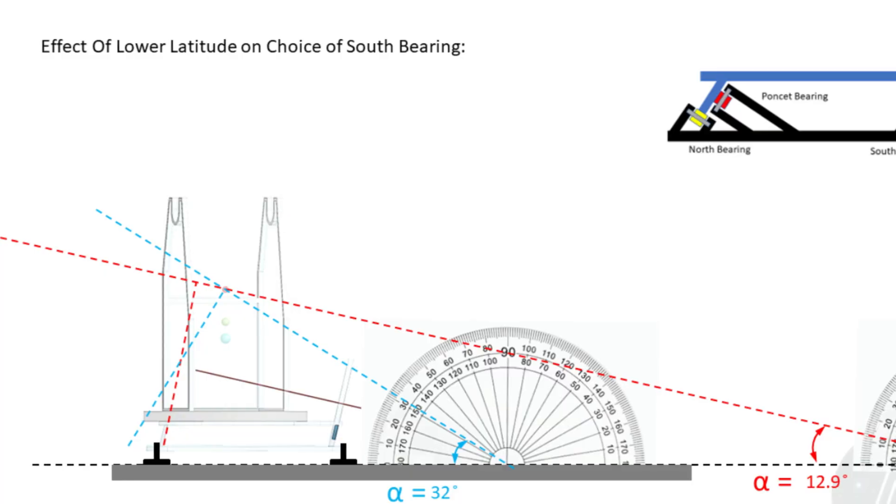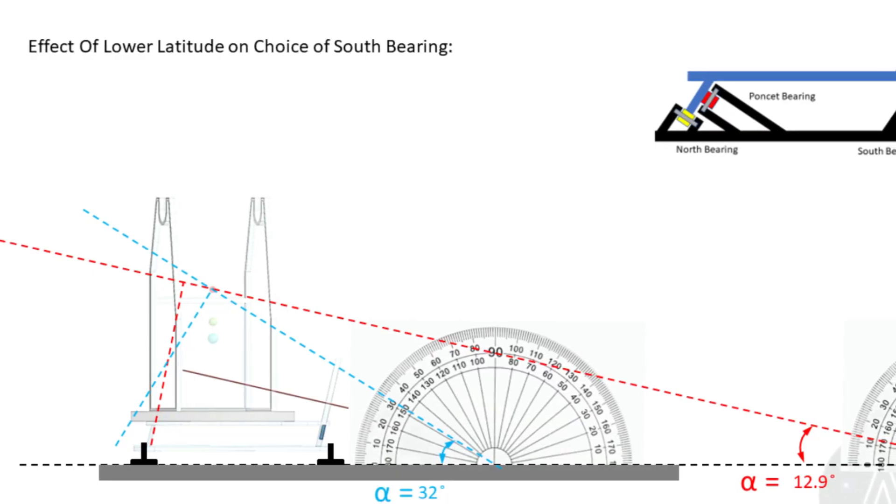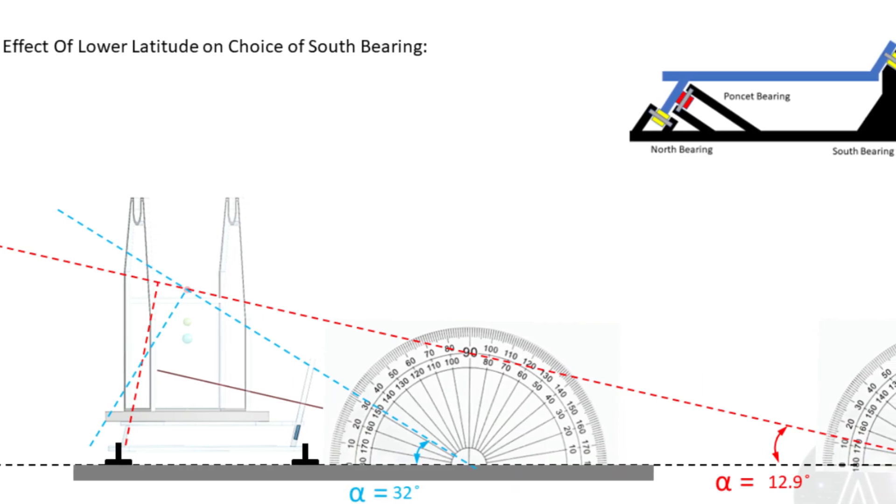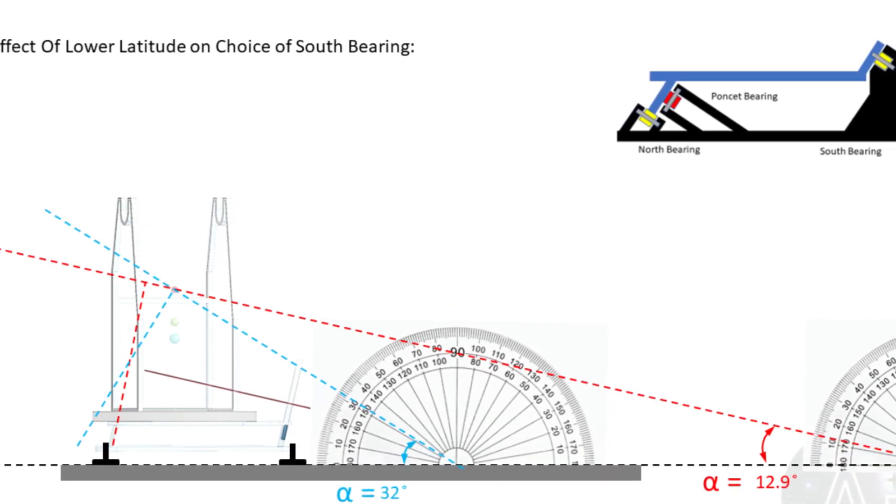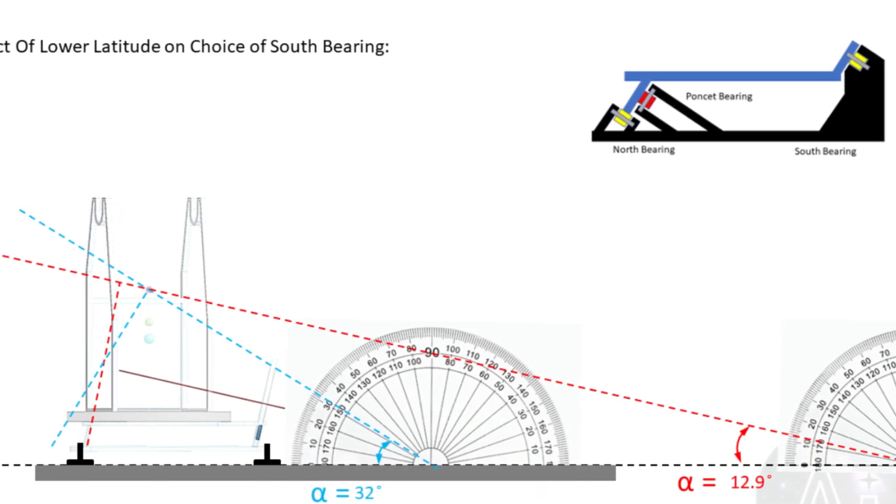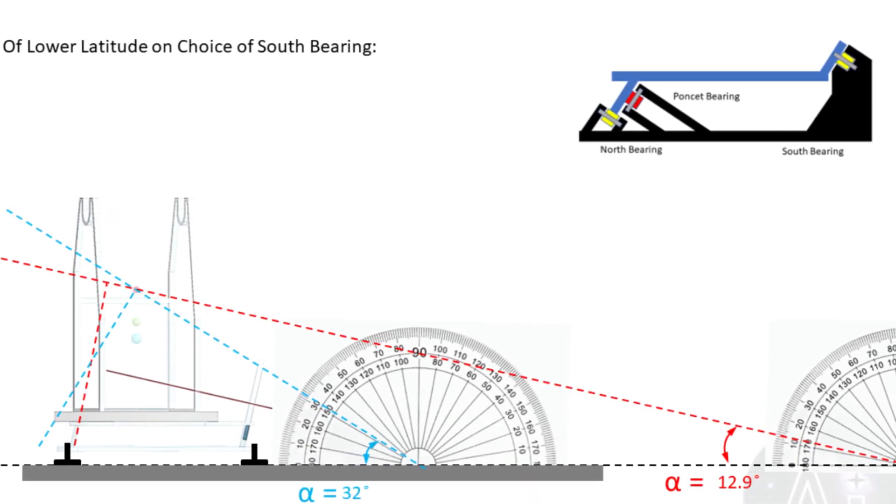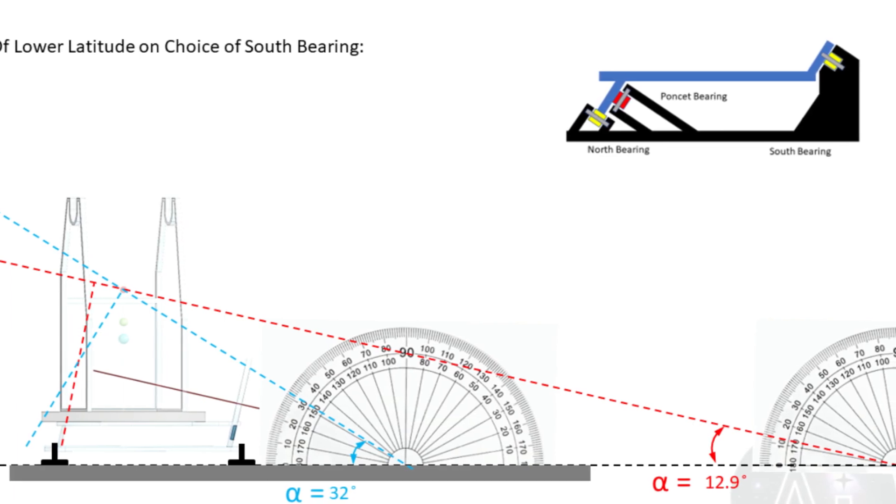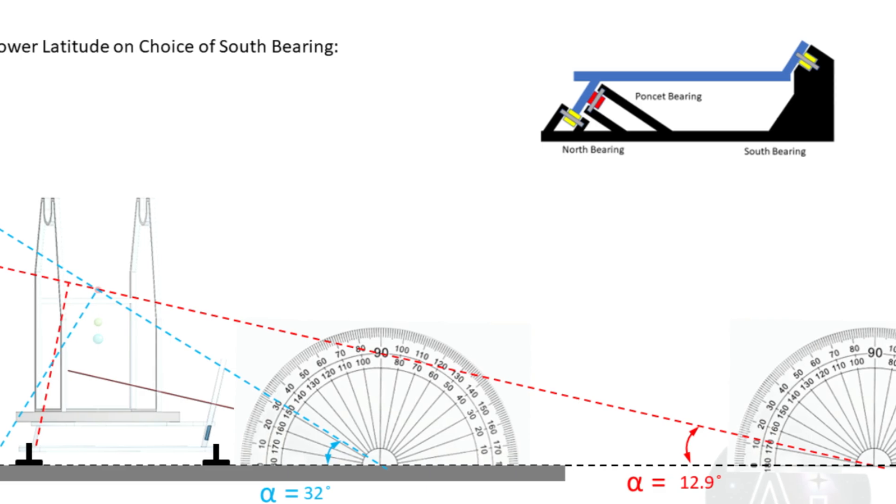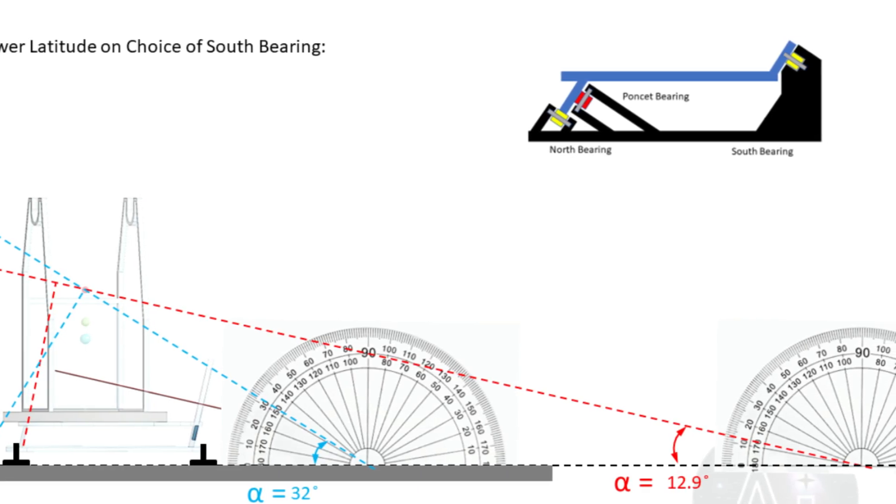Now in this schematic layout I have drawn two different latitudes: one is the 12.9 degrees and the other is 32 degrees. The reason for doing that is to show you guys how designing an equatorial platform for these two different latitudes will influence the size of the equatorial platform with different type of south bearings.